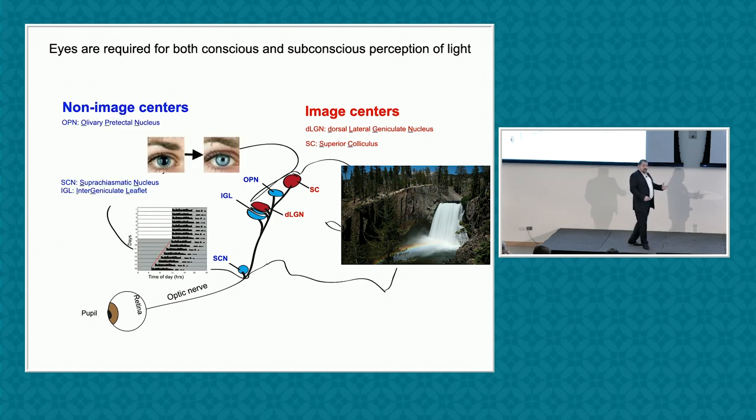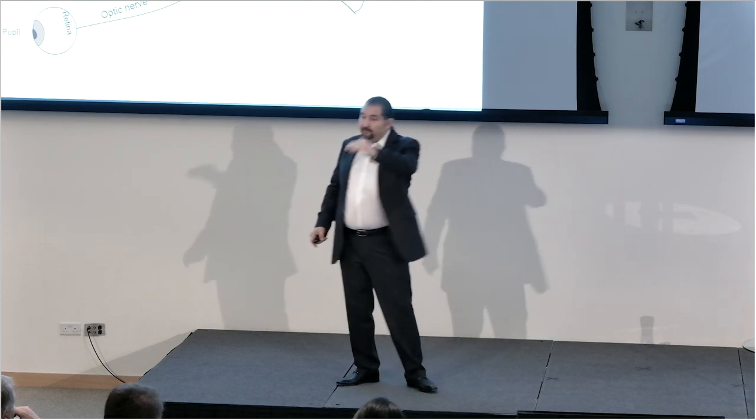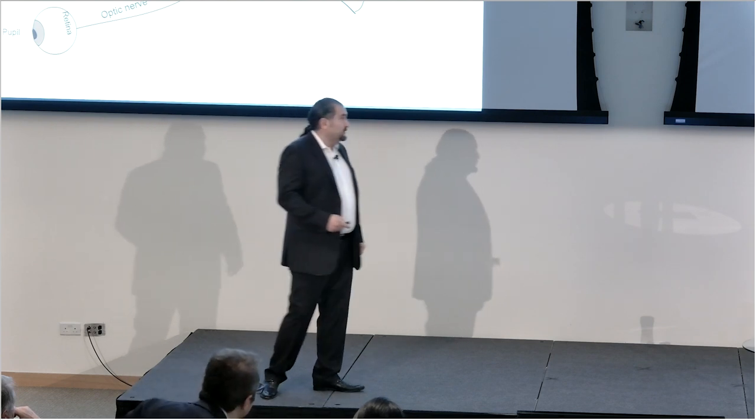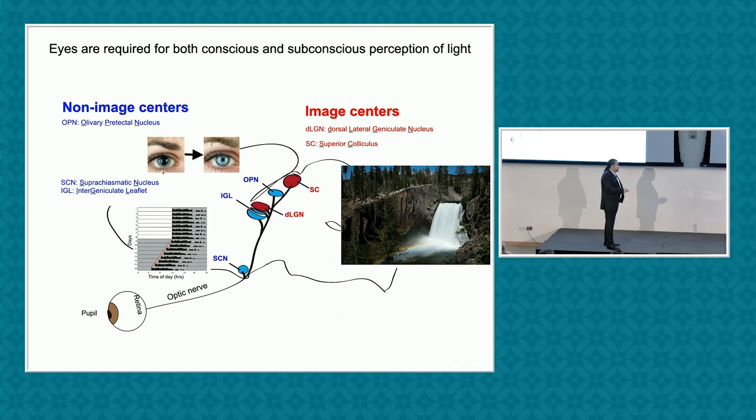But the eye detects functions that are independent of image formation, collectively known as non-image-forming visual functions. These include simple pupil constriction. The pupil regulates the amount of light that goes into your retina. Although this is a very reflexive and simple behavior, it actually requires five different synapses from the retina to the pupil muscle. What I'm going to concentrate most about today is circadian photoentrainment, which we thought was the exclusive function of the suprachiasmatic nucleus, the location of your circadian clock. But we now know the intergeniculate leaflet may be involved as well.